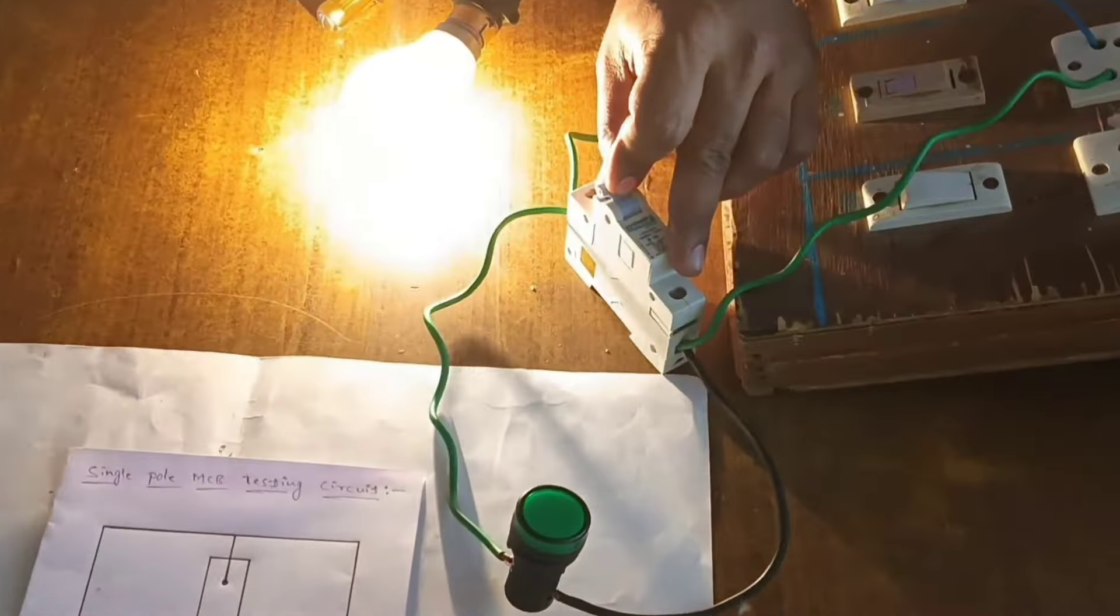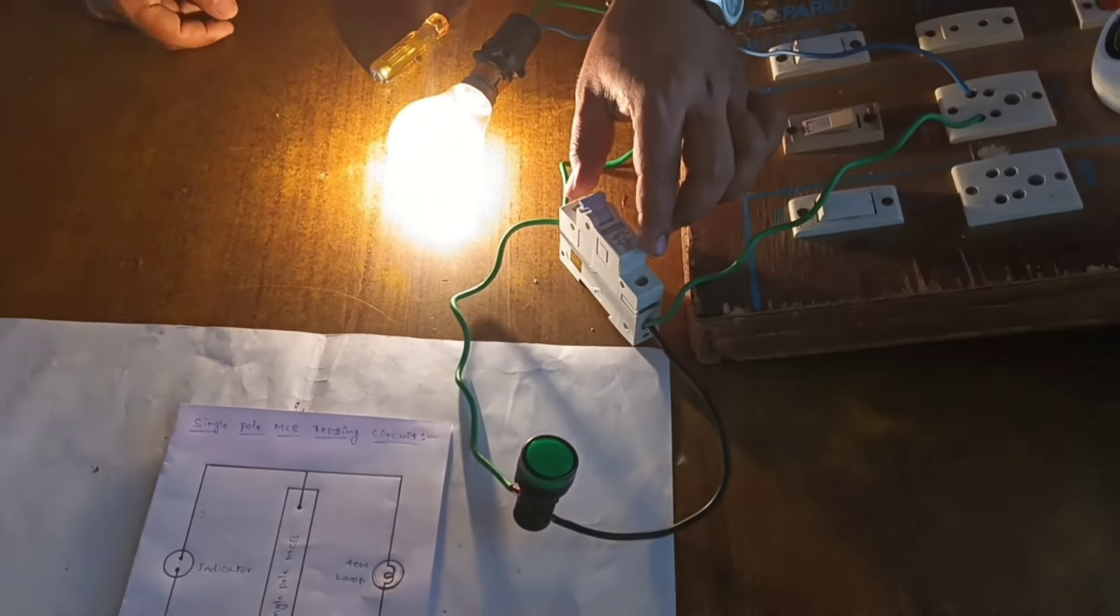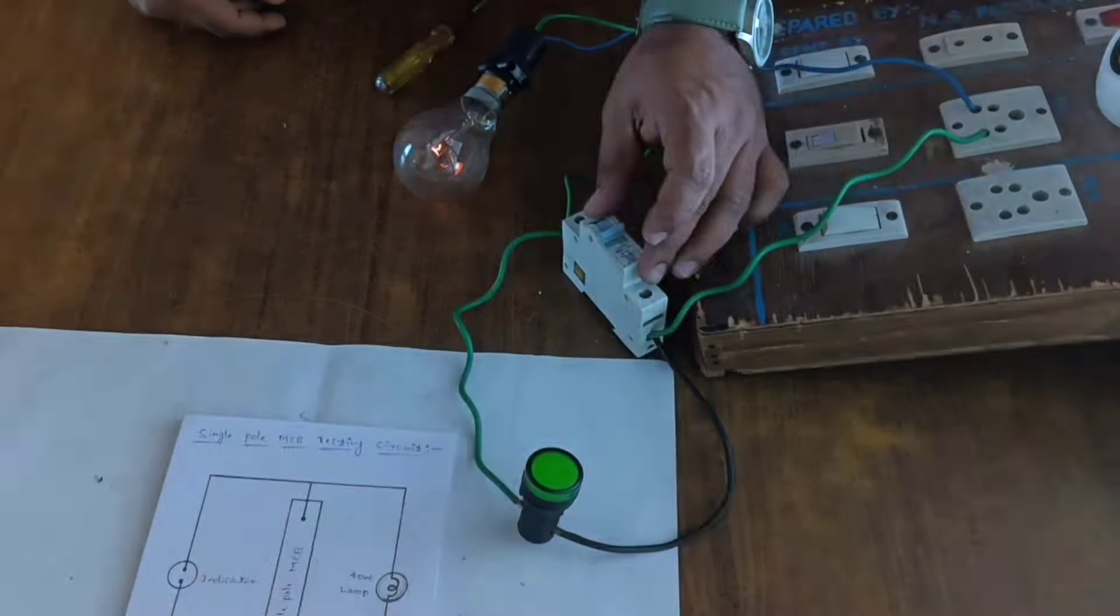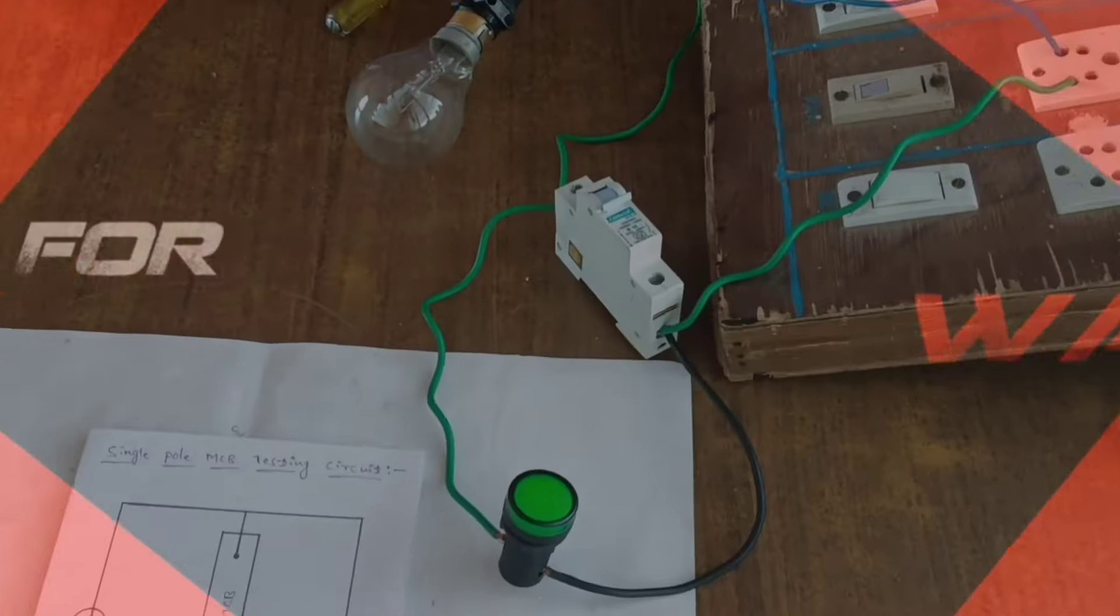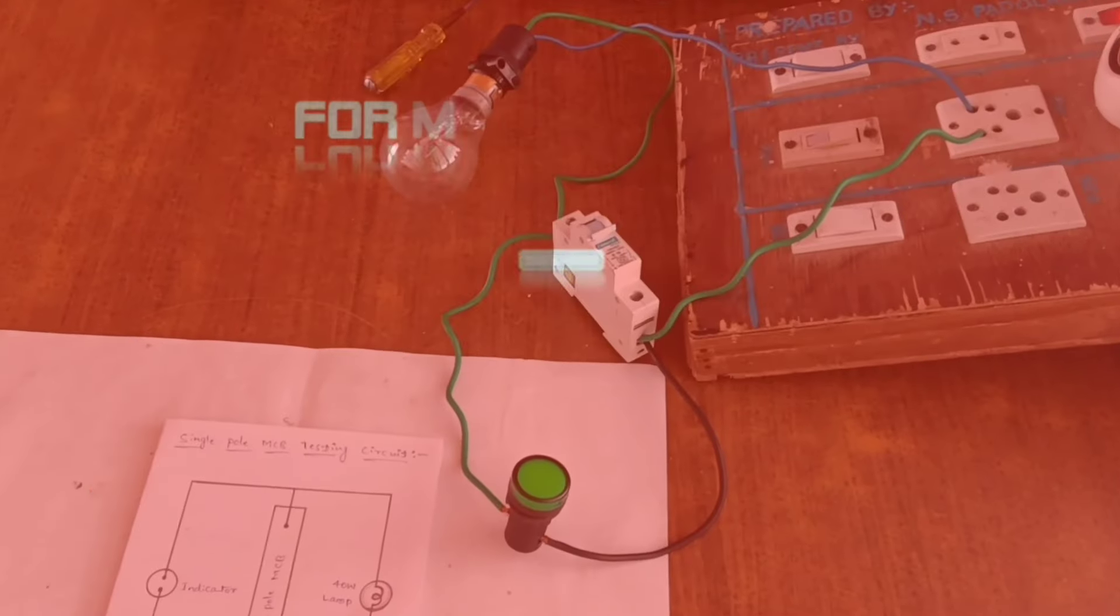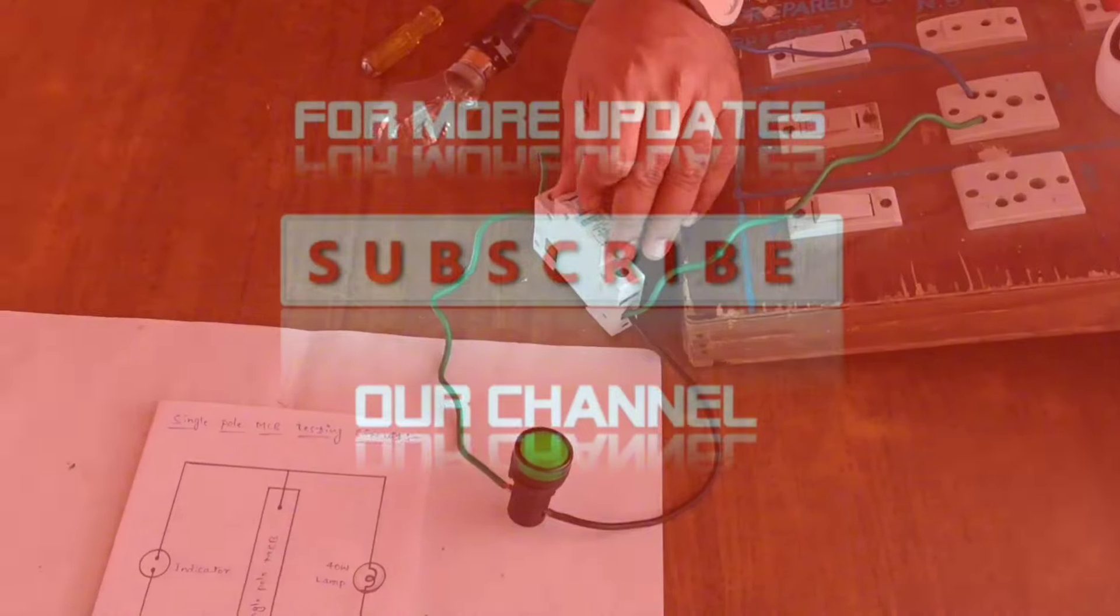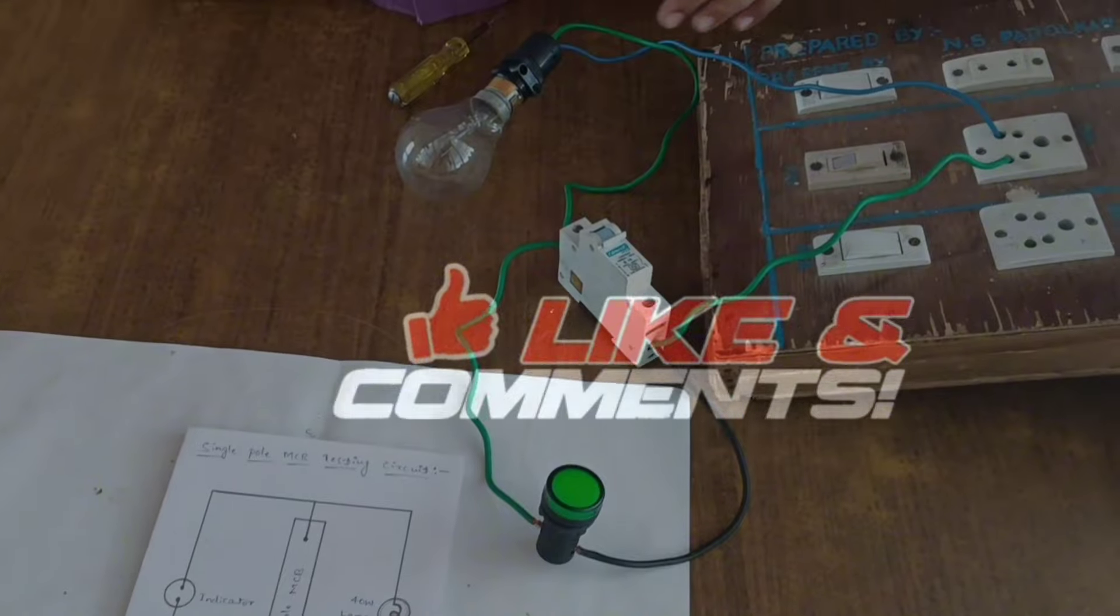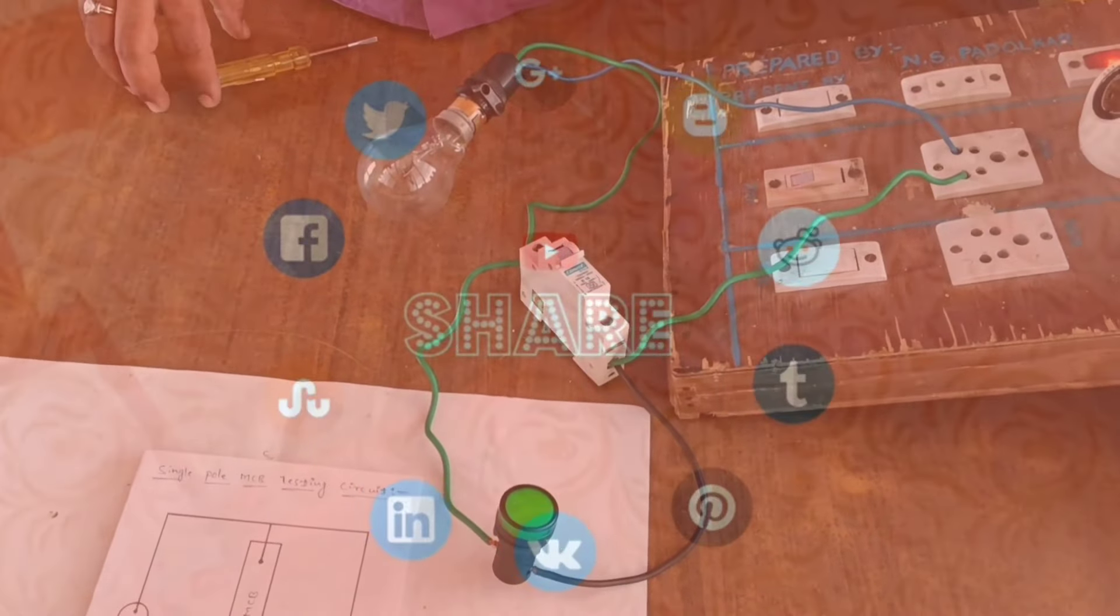You can see when on, this lamp will glow and indicator off. When off, indicator on, lamp off. This is single pole MCB testing.